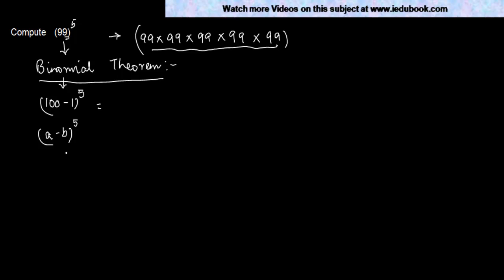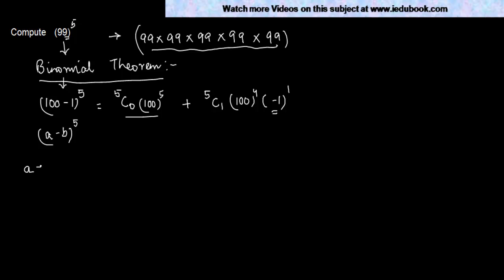Since you would have understood the method used in the binomial theorem, I'm not going into the details, but this can be written as: 5C0 × 100^5 + 5C1 × 100^4 × (−1)^1. Why did I take the power of b as minus 1? Because 100 − 1 can also be written as 100 + (−1), so b is equal to −1.